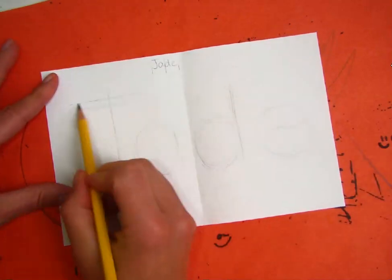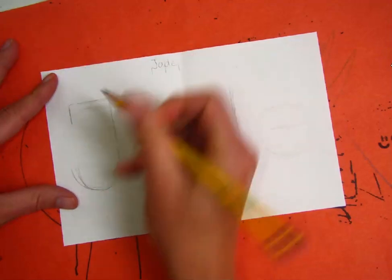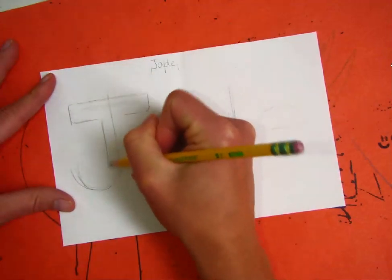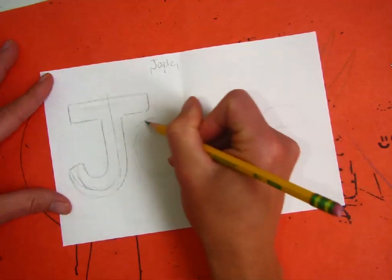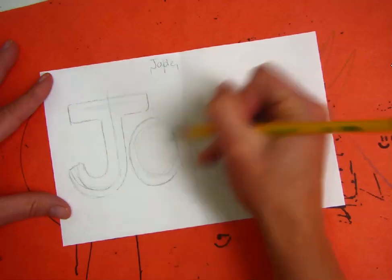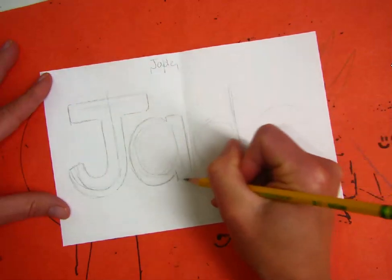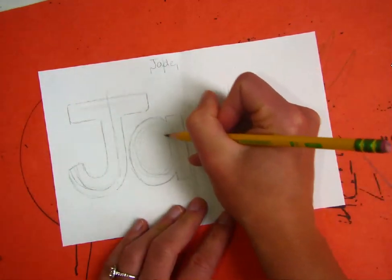We are going to now add the muscle and the skin around the skeleton. We're going to create a halo around it to turn our stick letters into block or bubble letters.